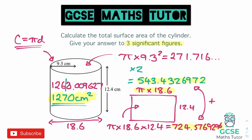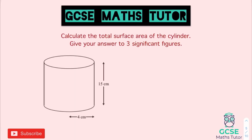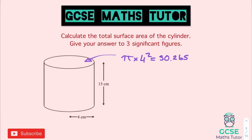Here is your final question on the surface area of a cylinder — pause the video and have a go. Starting with the circles: we've got a radius of 4, so to get the area we do pi times 4 squared. Writing down that answer before doubling it: pi times 4 squared gives us 50.26548246. That's the area of one circle.